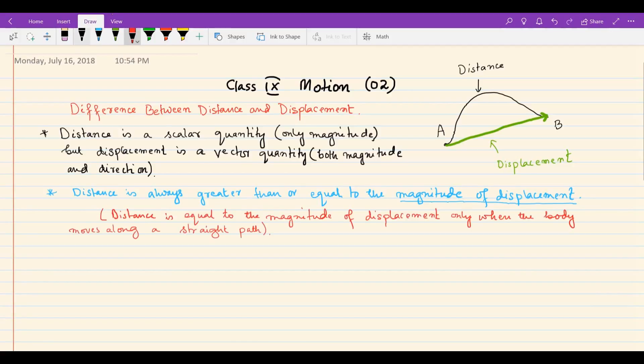Distance is equal to the magnitude of displacement only when the body moves along a straight path. That means if a body moves in a straight line, distance equals magnitude of displacement.